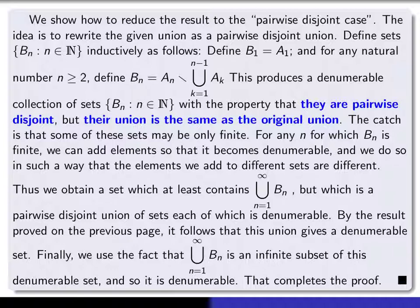The general step b sub n will be a sub n, but it will remove all of the previous a's. And so by doing that, you produce a denumerable collection of sets b sub n. They turn out to have the same union as the union of the a's, but they are now pairwise disjoint. They have these two properties: they're pairwise disjoint, but their union is the same.